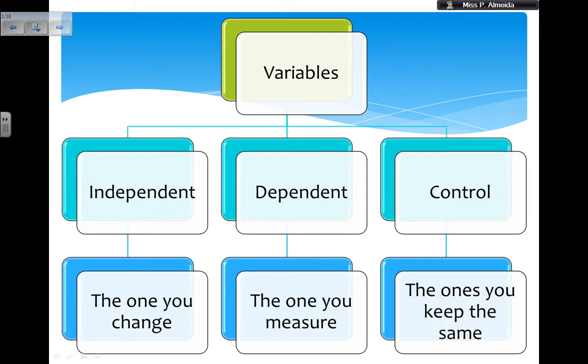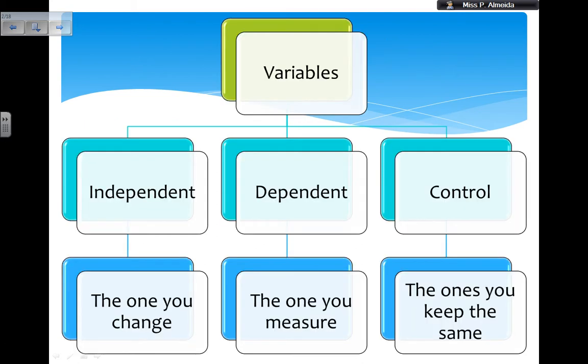So, variables. With the variables, you have three types: you have the independent, dependent, and control. You need to take them into account every time you're doing an experiment.